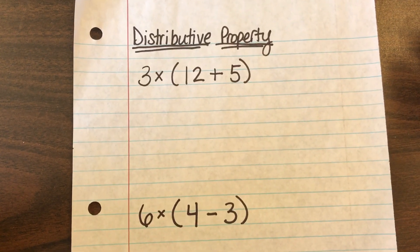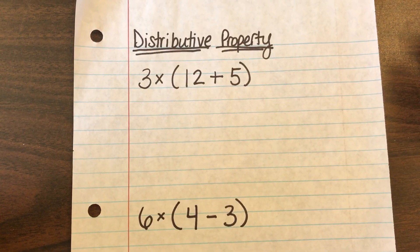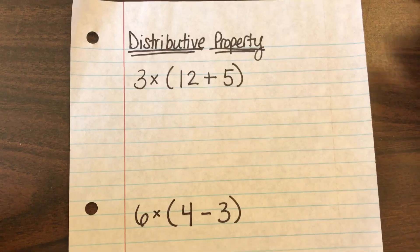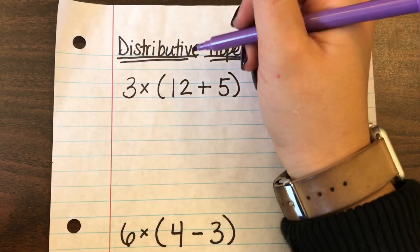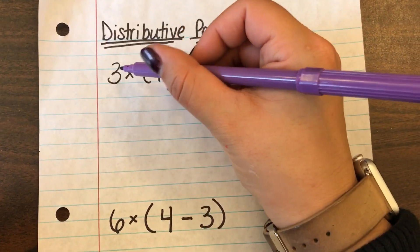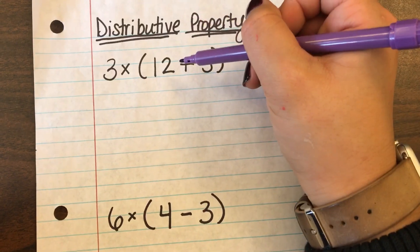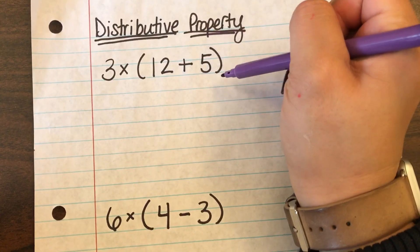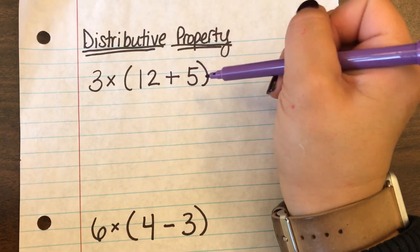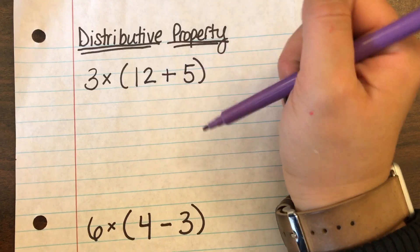In this video I'm going to show you how to use the distributive property to solve this math problem. So if you look at the first one up here, it says three times the sum, because it's in parentheses, so the sum of 12 and 5, or the sum of 12 plus 5.